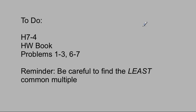Here are our tasks. We're going to do H7-4 from the homework book. You're going to do problems 1, 2, 3, skipping 4 and 5, and then moving on to 6 and 7. Be extremely careful to find the least common multiple — that's the only common mistake, when students don't identify the number that is the absolute smallest. All right. Good luck. And turn in those notes.